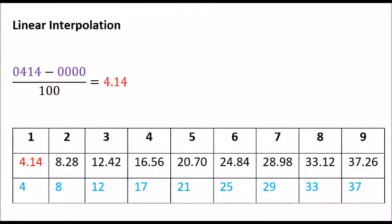Take the log of 1.1 and subtract the log of 1.0 as seen in purple. Divide by 100. That gives us 4.14 for the first row. The numbers in the table are simply multiples of 4.14 rounded to the nearest integer. That is seen in blue at the bottom of the screen. The same pattern applies to every other row in the table. Go ahead and verify for yourself.